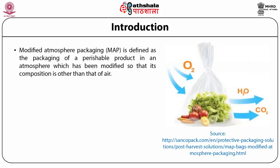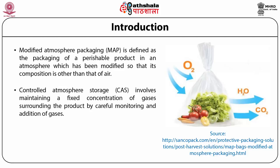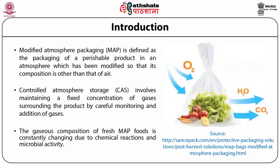Modified Atmosphere Packaging (MAP) is defined as the packaging of a perishable product in an atmosphere which has been modified so that its composition is other than that of air. Controlled atmosphere storage involves maintaining a fixed concentration of gases surrounding the product by careful monitoring and addition of gases. The gaseous composition of fresh MAP foods is constantly changing due to chemical reactions, microbial activity, and gas exchange between the pack headspace and the external environment through permeation across the package material.